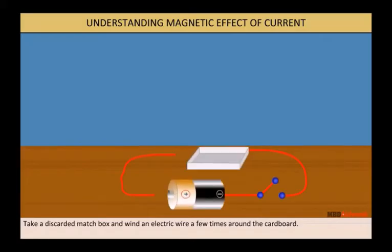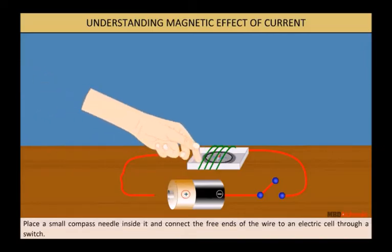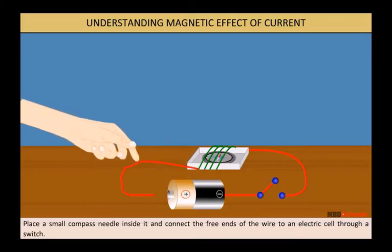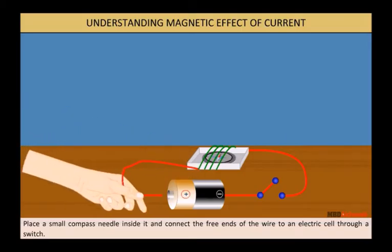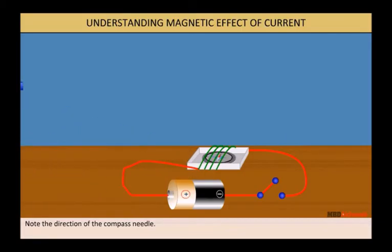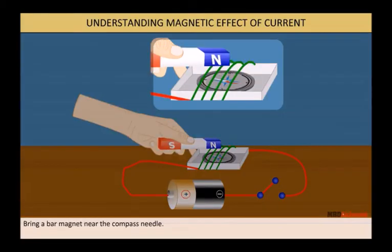Take a discarded matchbox and wind an electric wire a few times around the cardboard. Place a small compass needle inside it and connect the free ends of the wire to an electric cell through a switch. Note the direction of the compass needle.